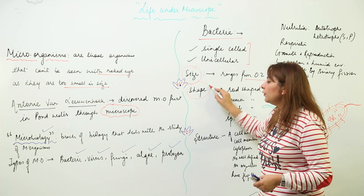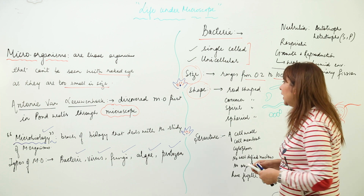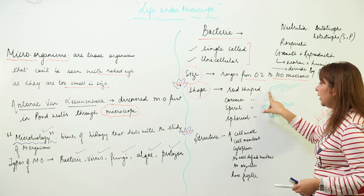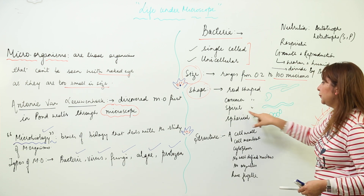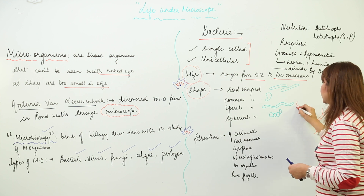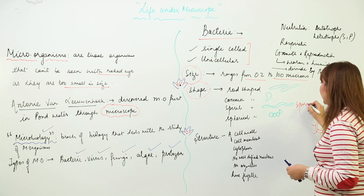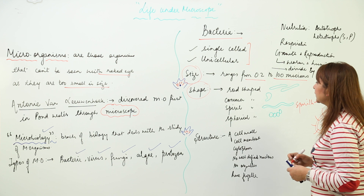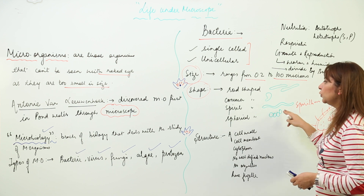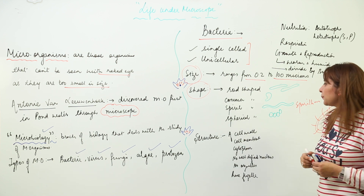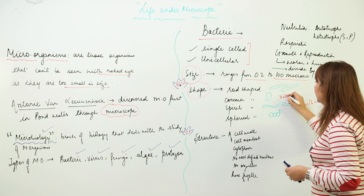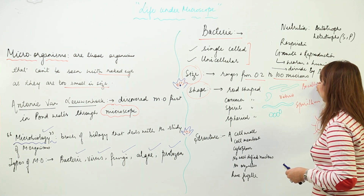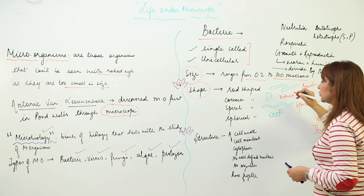Bacteria are of different shapes. They can be rod-shaped (bacilli), comma-shaped (vibrio), spiral-shaped (spirillum), or spherical. So these are the common shapes of bacteria with their respective examples.